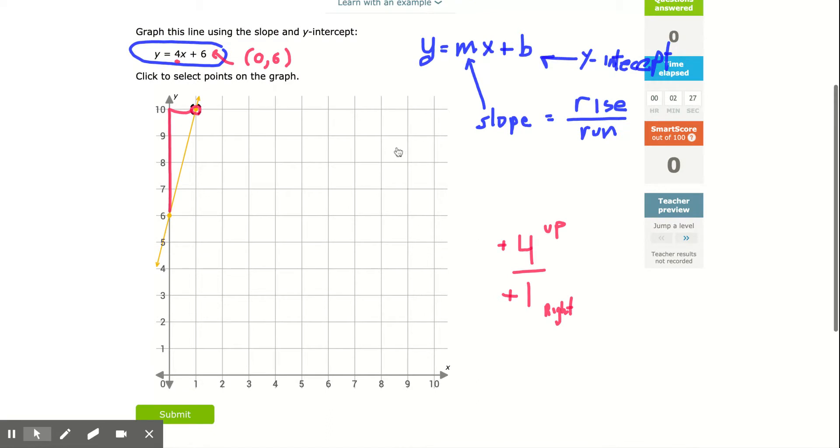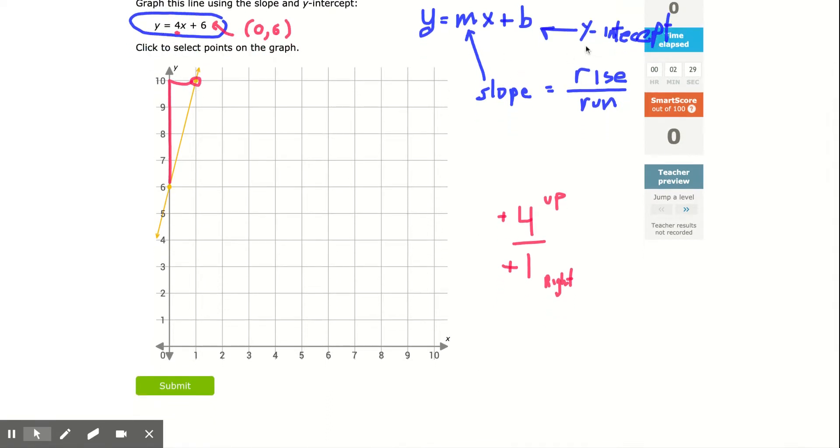So write this down. Write down y equals mx plus b, where m is your slope, rise over run, b is your y-intercept. And then you can use that to do the rest of these problems.